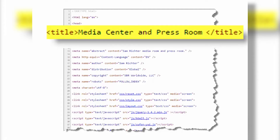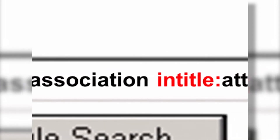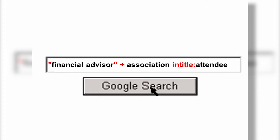Here's another example I actually used to grow my business. In Google, I search for the phrase "Financial Advisor" in quotation marks along with the word "association," but I limit the search to only web pages where the title contains the word "attendee" — using intitle:attendee. I'm hoping to find a list of attendees at Financial Advisor Association conferences or events.